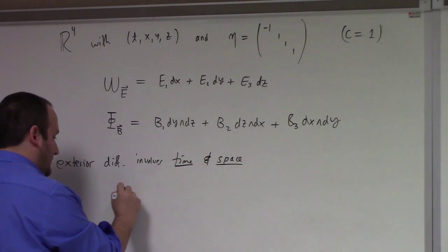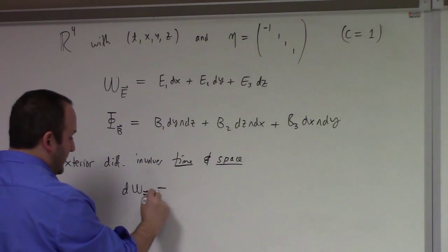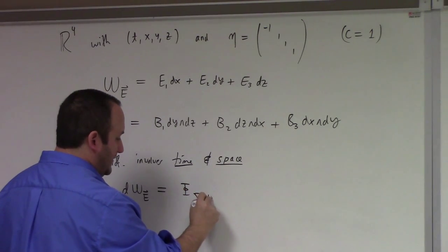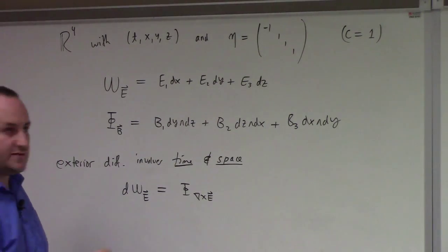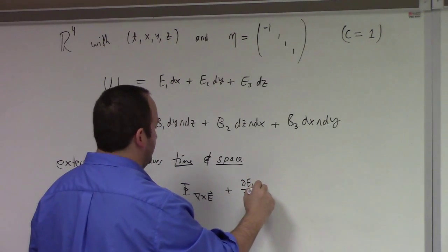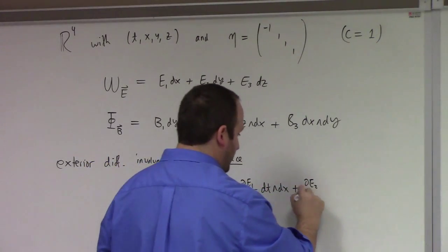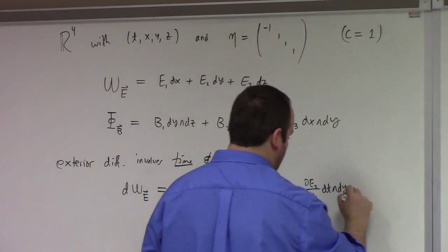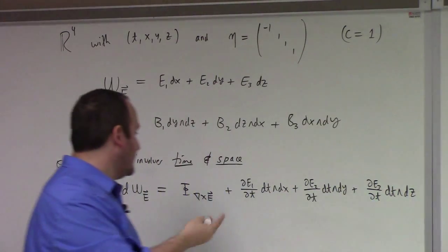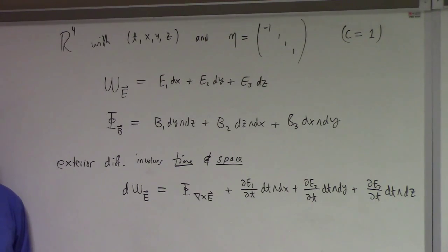What's the differential of the electric field flux form? For the reasons we talked about before, it's the flux form of the curl of E. That's what happens with the spatial derivatives, plus time pieces: plus partial E_1 partial t, dt wedge dx, plus partial E_2 partial t, dt wedge dy, plus partial E_3 partial t, dt wedge dz. I'm skipping some detail here, but basically there are derivatives with respect to x, y, and z in the exterior derivative, but those follow the same pattern we looked at before in R^3 and collapse into this curl term. But there's also time derivatives which I've written explicitly there.